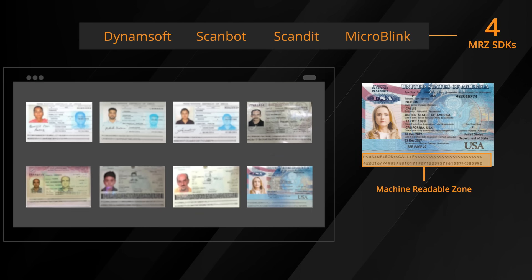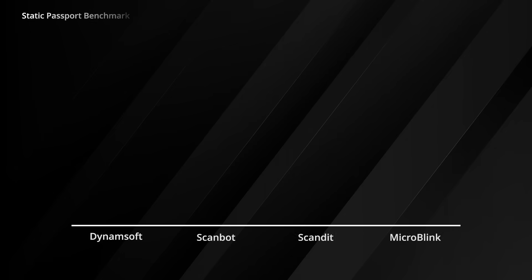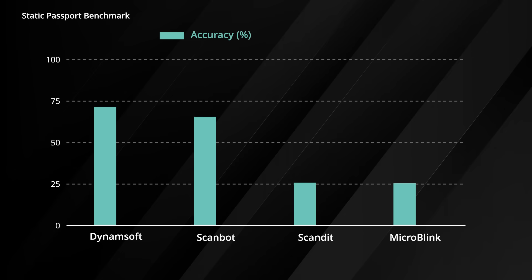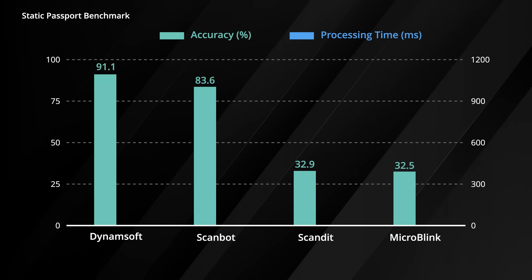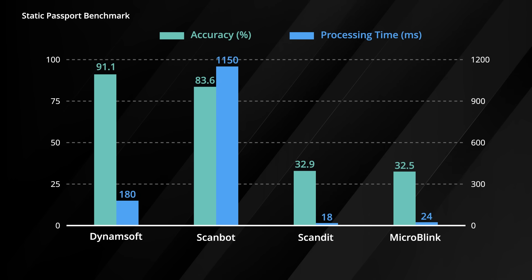The goal was to measure machine-readable zone extraction and recognition accuracy. On passports, Dynamsoft reached 91.1% accuracy, among the top results. Each image was processed in about 180 milliseconds, showing a solid balance of speed and accuracy.